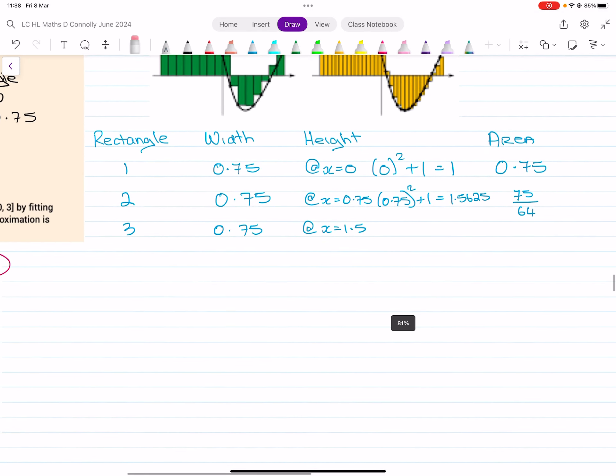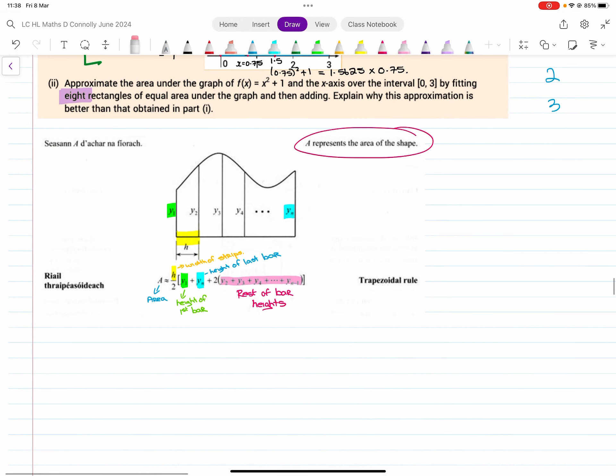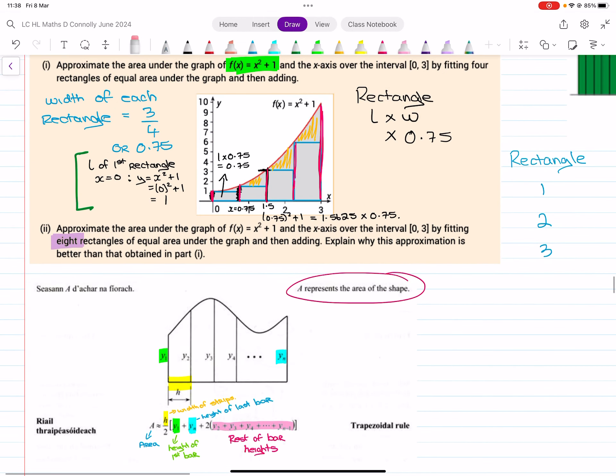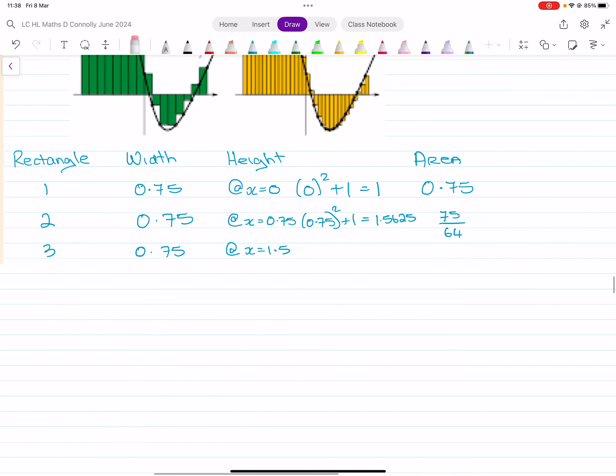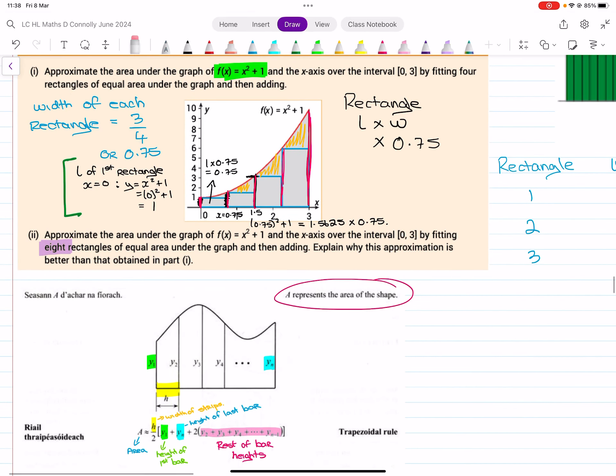You'll have an answer using the area of the rectangles and an answer using the trapezoidal rule for four equal bars. Then you'll have an answer for the area of the rectangles and a trapezoidal rule for the eight bars when you fit them in.